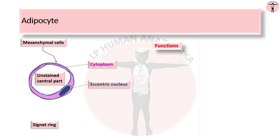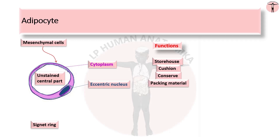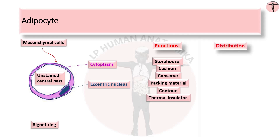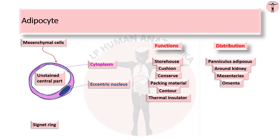The functions of adipocytes are: it acts as a storehouse of fat, and acts as a cushion in many sites such as ischiorectal fat. It helps to conserve body heat. It provides packaging material around some viscera to keep them in position, such as perinephric fat. It is responsible for providing the contour of the human body and acts as a thermal insulator. It is distributed in subcutaneous tissue as panniculus adiposus, around the kidney, in the mesenteries, omenta, as localized fat in synovial membrane and in the bone marrow.